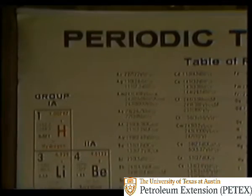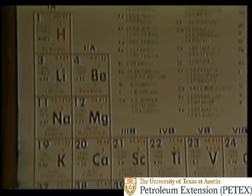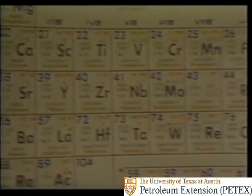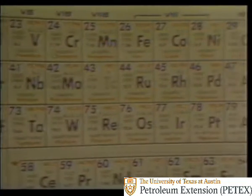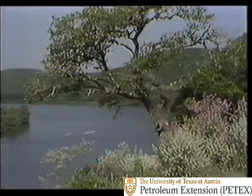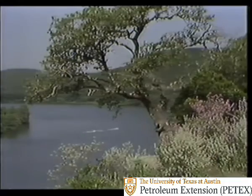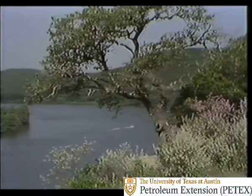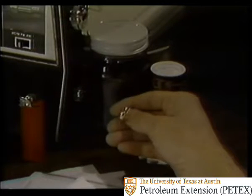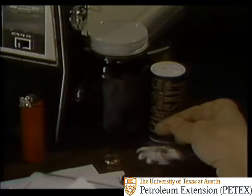Let's take a look at the periodic chart. It lists the elements, things like calcium and iron, either individually or in combination. These elements make up our entire world. Gold is an example of a single element substance, and salt is a combination of two elements, sodium and chlorine.